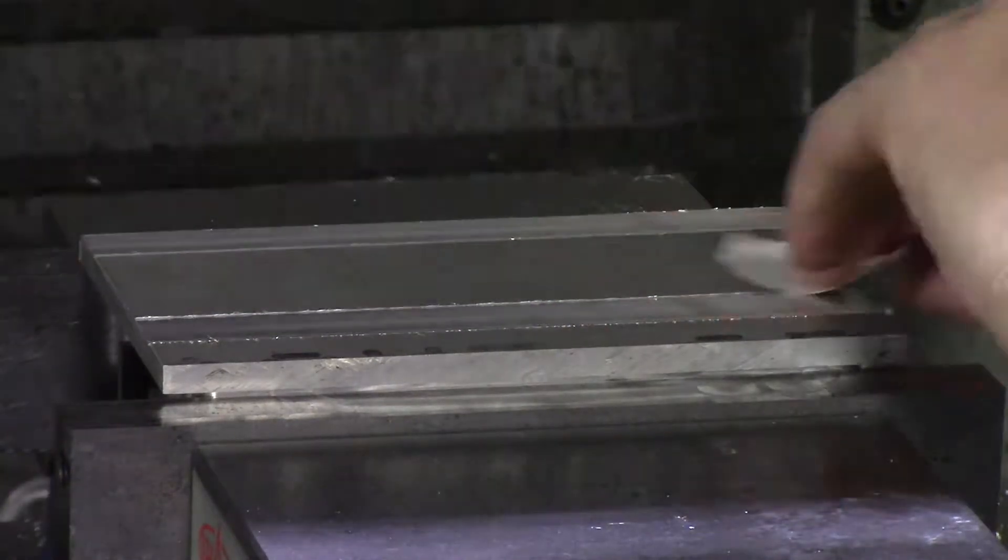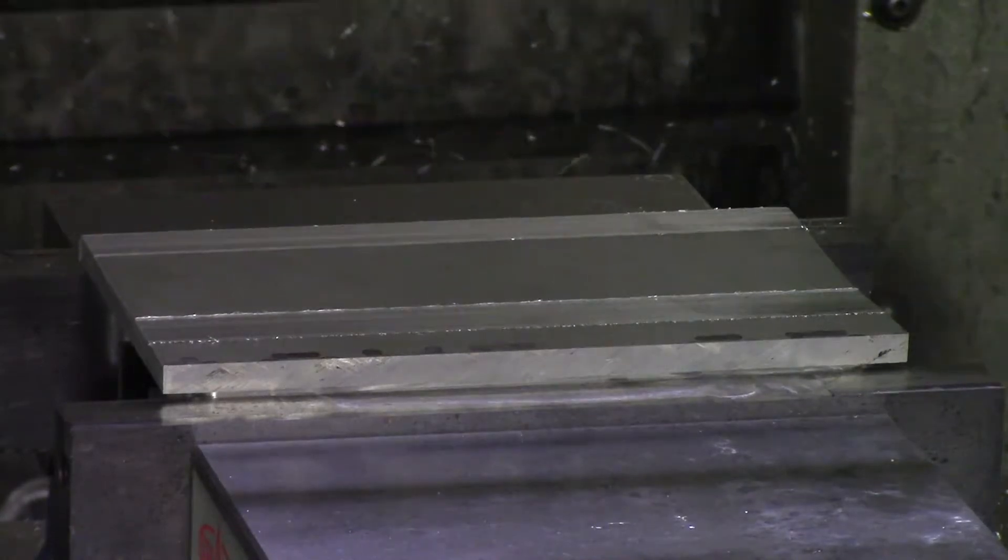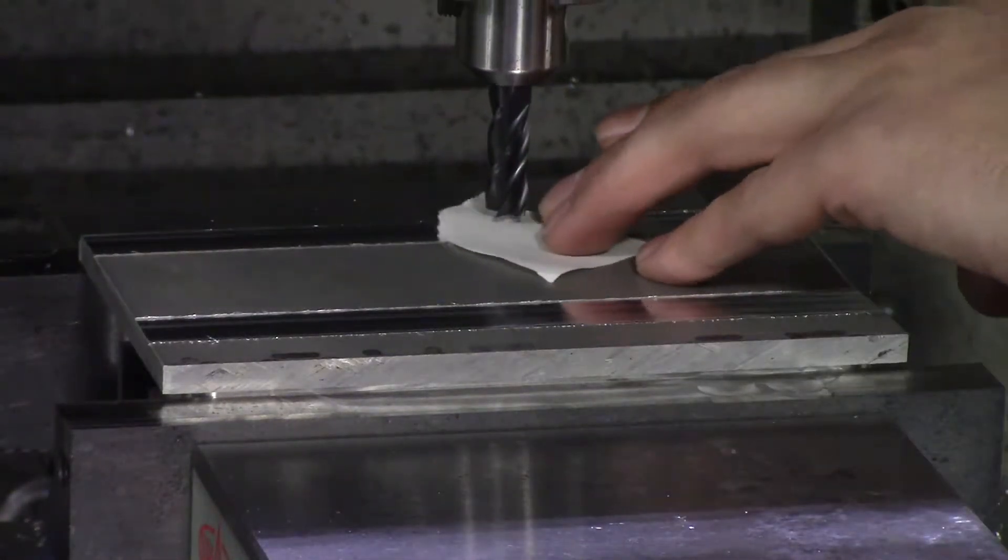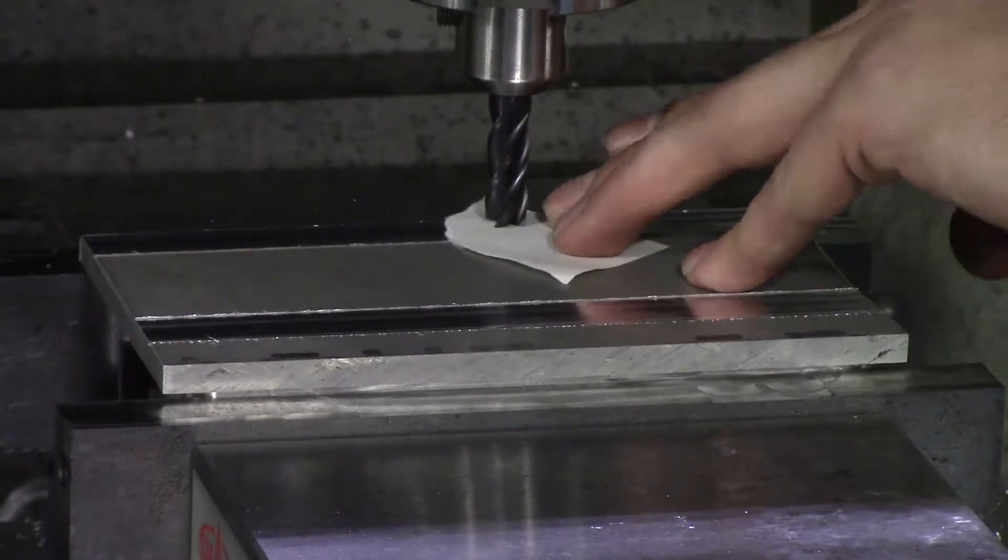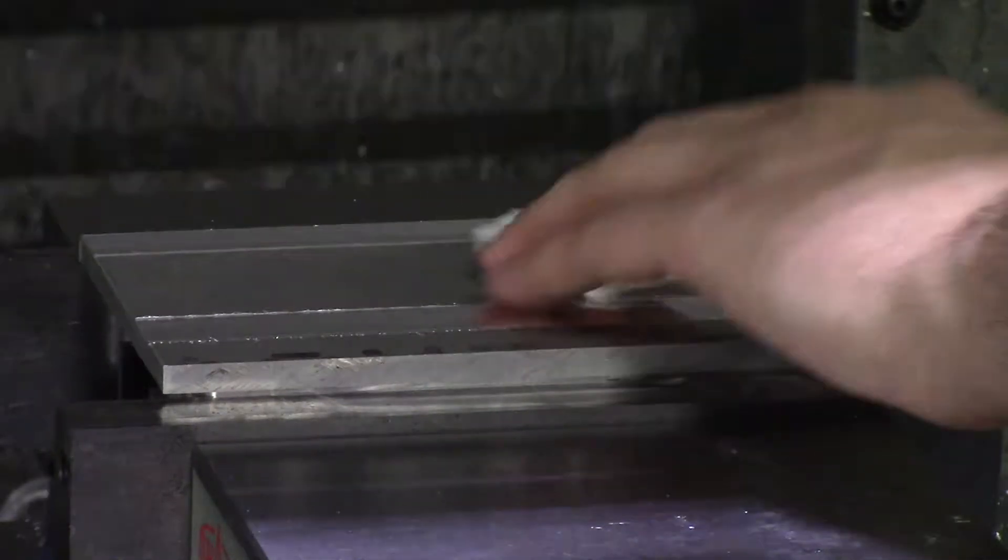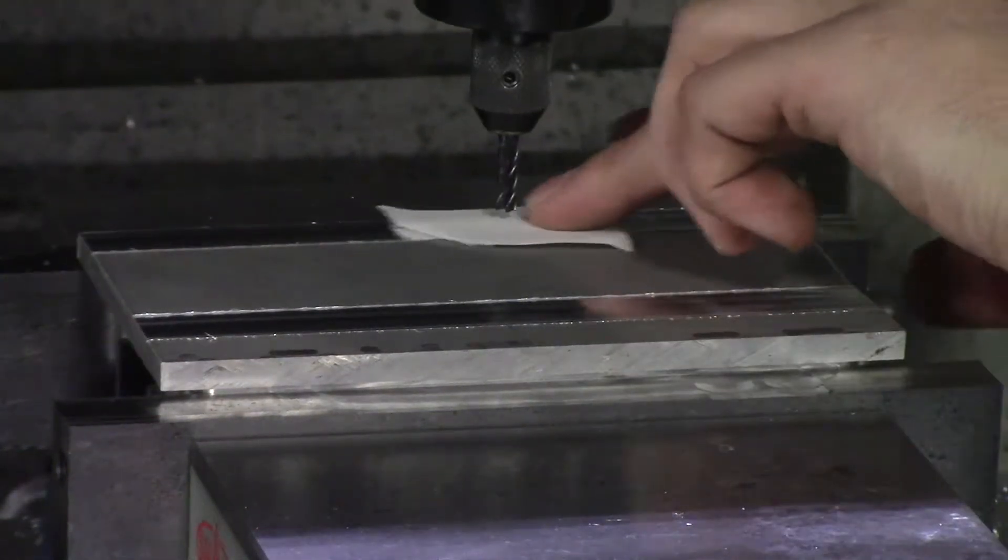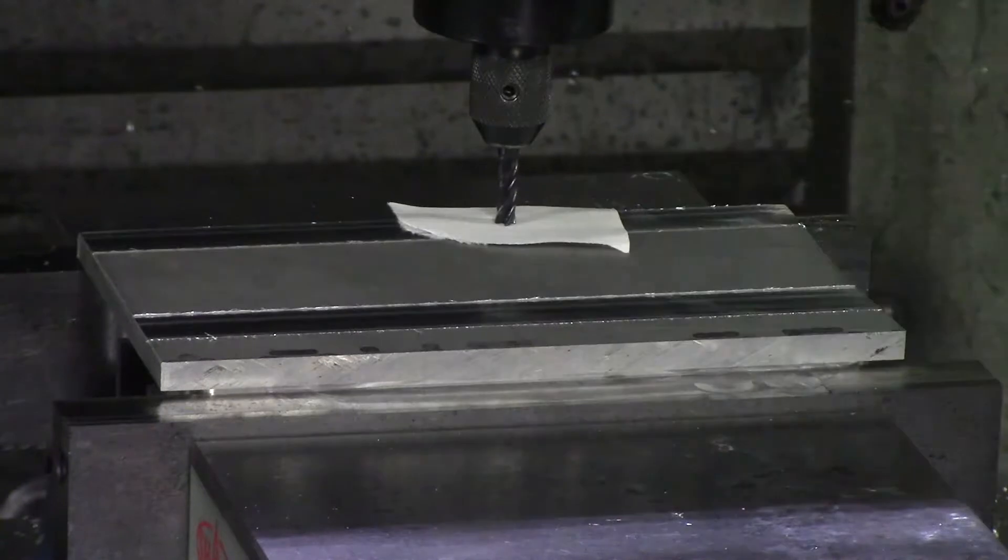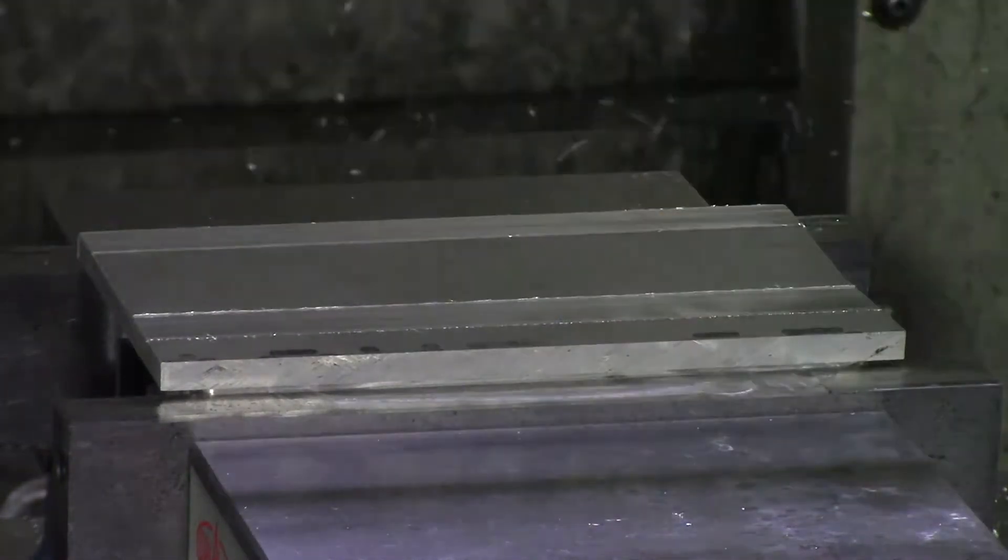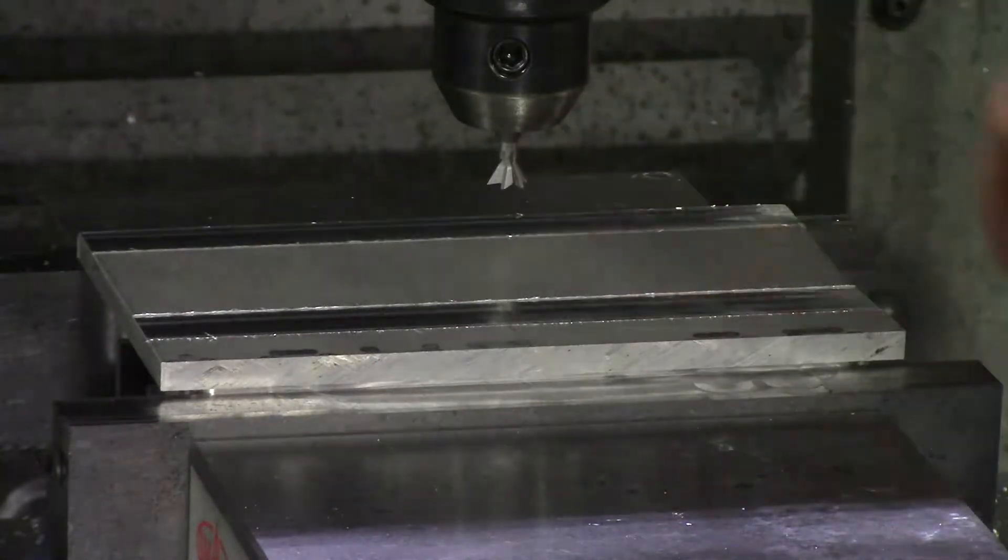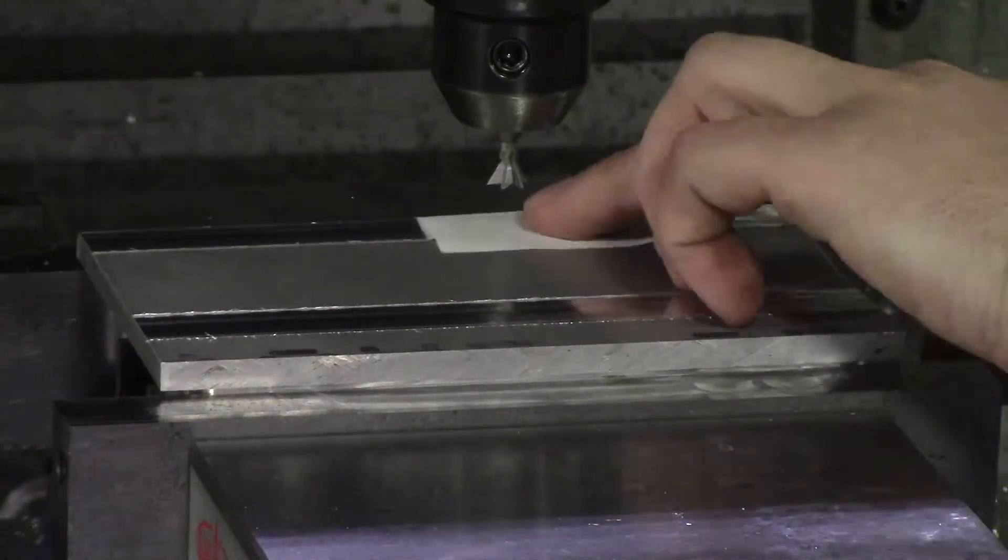Just make sure that you try to touch them off all the same. As soon as the paper stops, you have to go down the thickness of the paper. So if the paper is four thou thick, you need to drop the tool four more thou. There wasn't anything hard about touching any of the tools off.